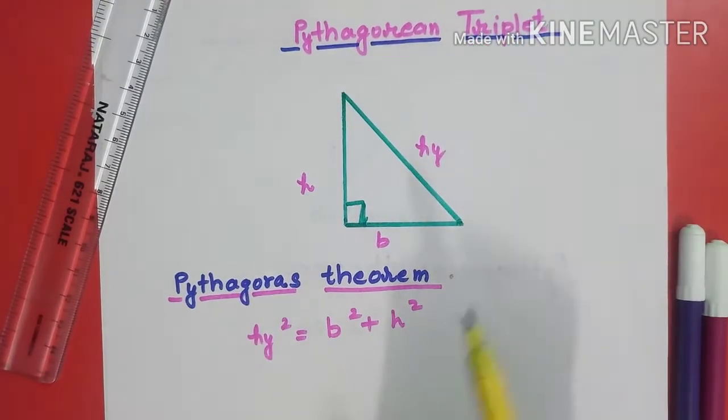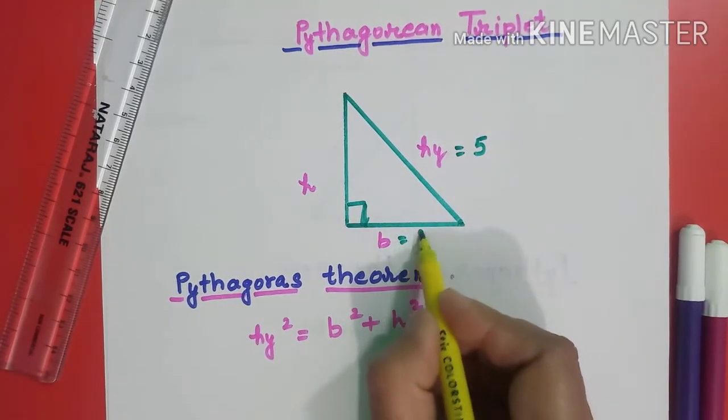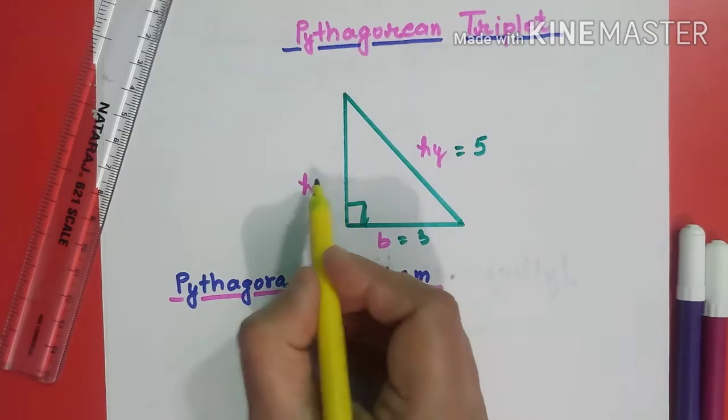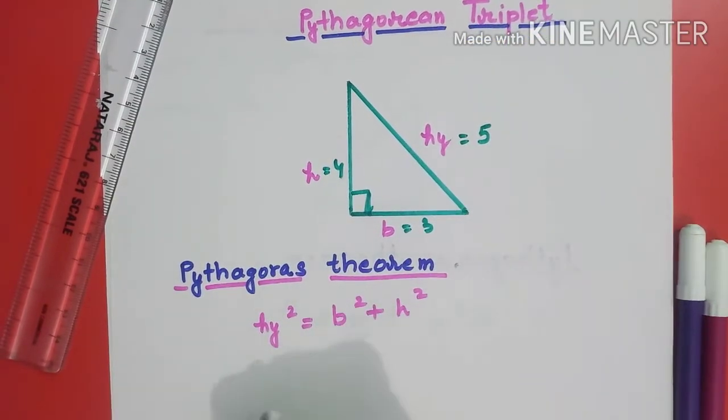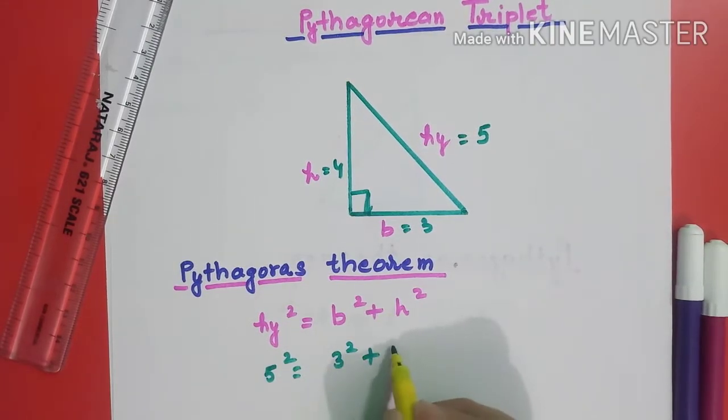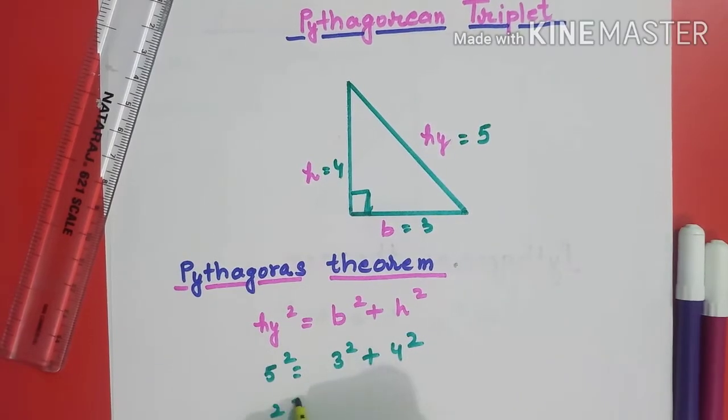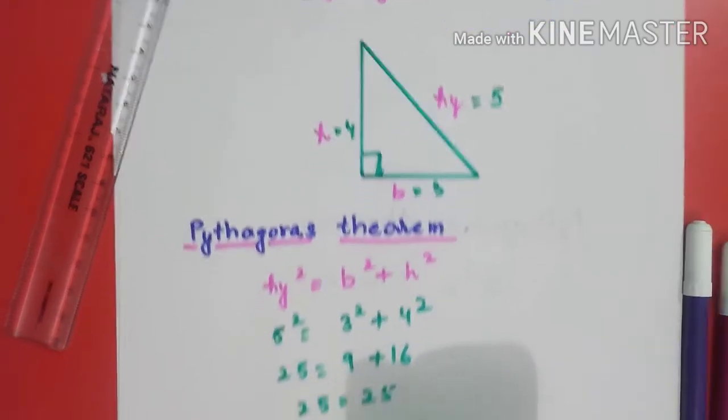Okay, let's see through one example. Suppose I have hypotenuse 5, base 3 and height 4. Now I am going to put these values in this theorem. Hypotenuse is 5, base is 3 and the height is 4. 5 square is 25, 3 square is 9, 4 square is 16. 25 is equal to 25.